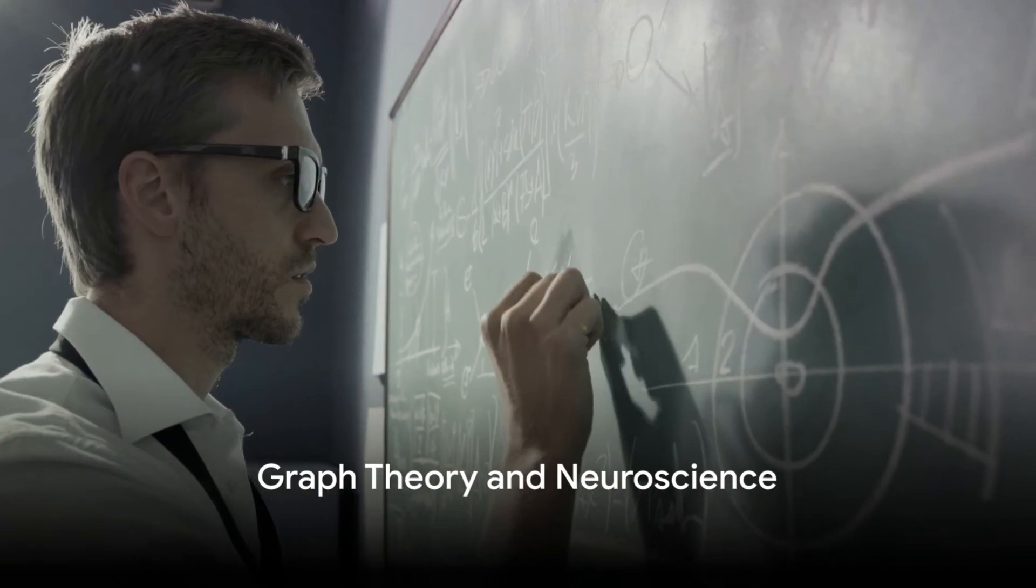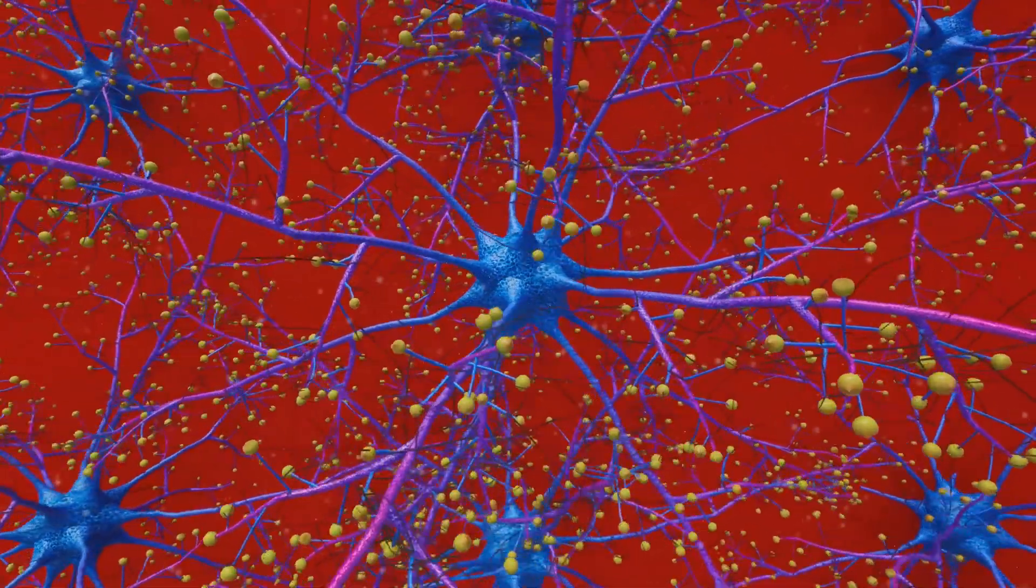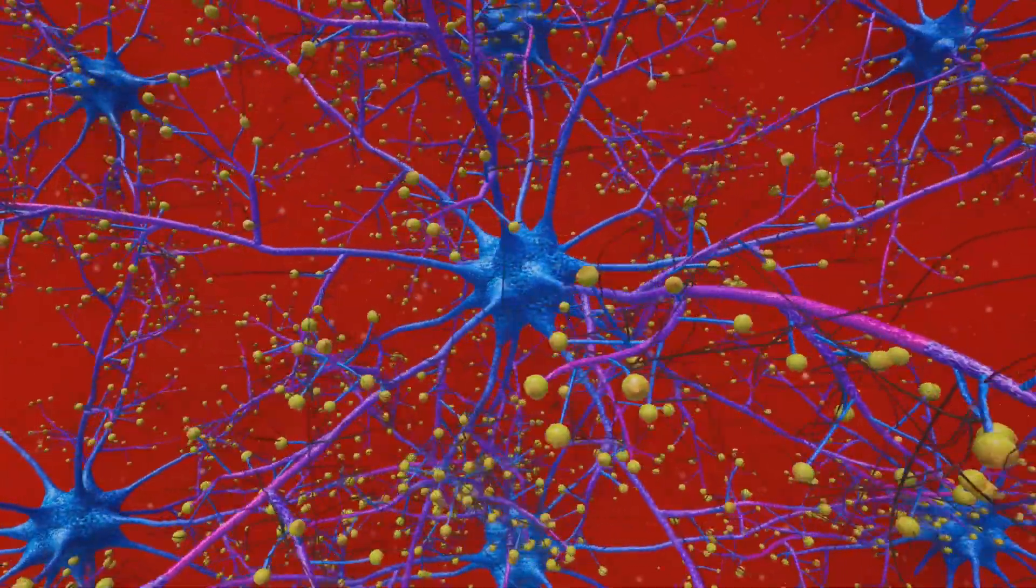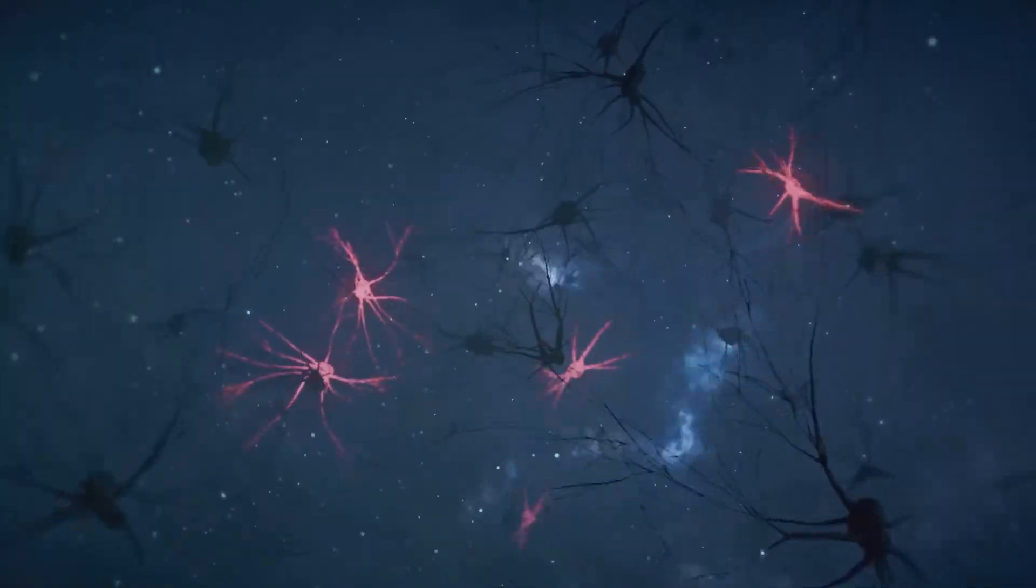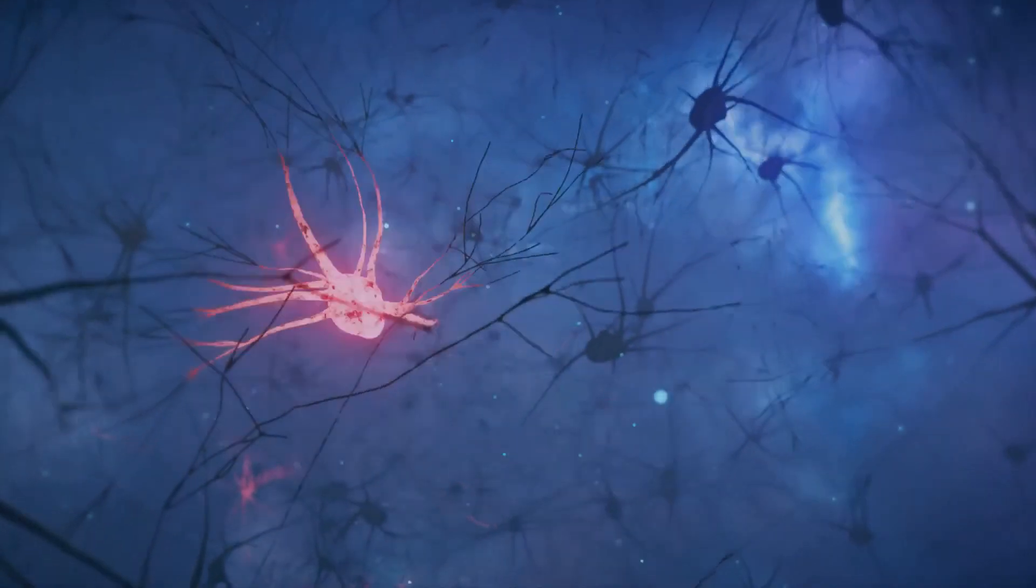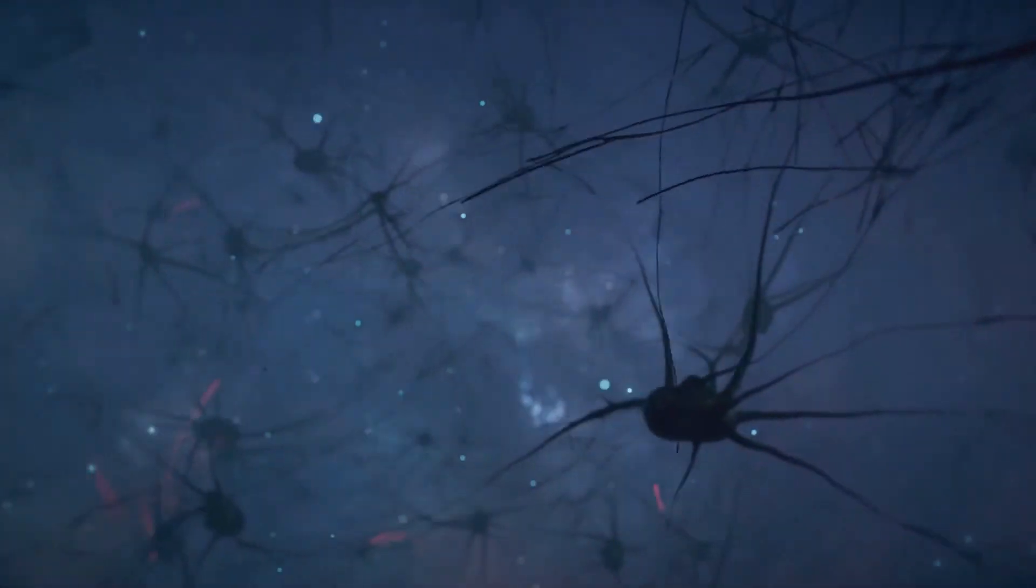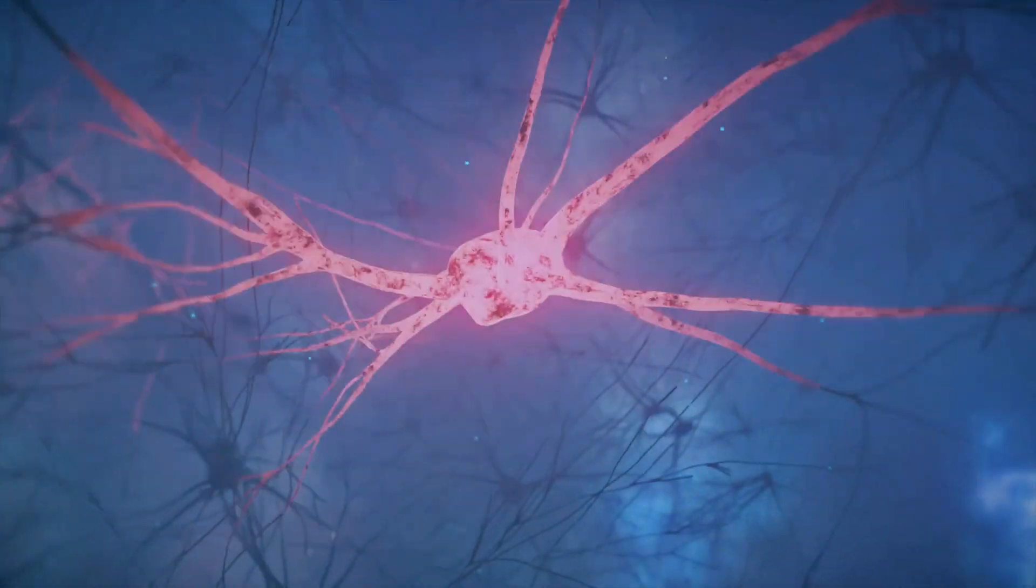Secondly, the application of graph theory to neuroscience. Graph theory is a branch of mathematics concerned with networks of points connected by lines. Scientists have used it to model the brain as a complex network, with neurons as points and synaptic connections as lines.